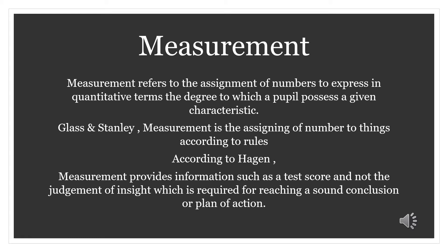According to Hagen, measurement provides information such as a test score, and not the judgment or insight which is required for reaching a sound conclusion or plan of action. This means measurement provides us a number, but it does not provide us the judgment or the insight. That judgment is made through our third tool — evaluation. Through measurement, only numbers are assigned, or test scores are given.